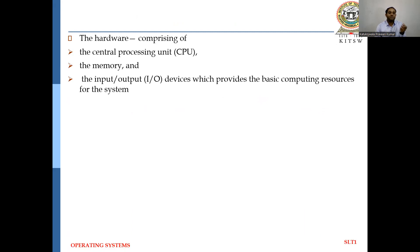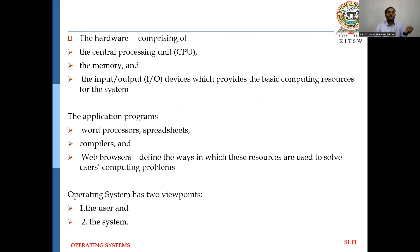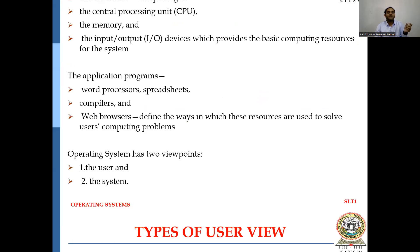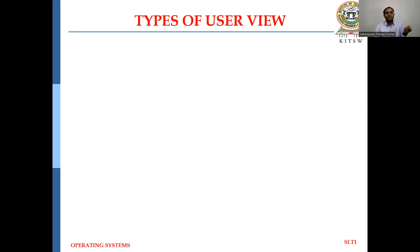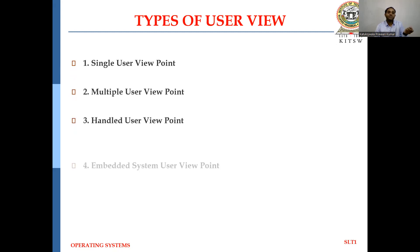Hardware comprises the CPU, memory, and I/O devices. Application programs comprise Word, Excel, compilers, web browsers, and so on. The Operating System has two viewpoints: the User Viewpoint and the System Viewpoint. The types of User Views are Single User Viewpoint, Multiple User Viewpoint, Handheld User Viewpoint, and Embedded System User Viewpoint.